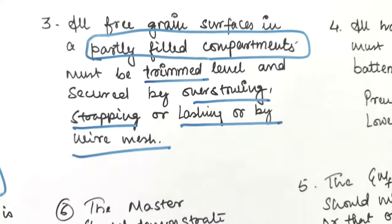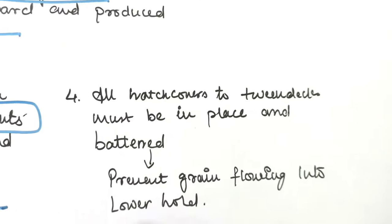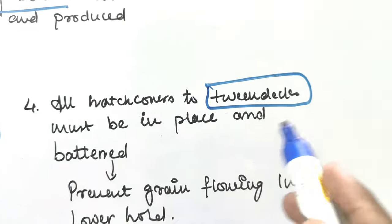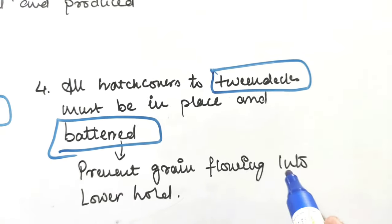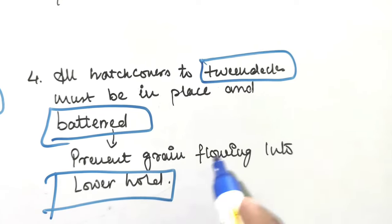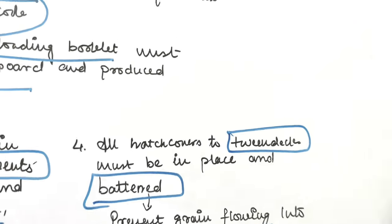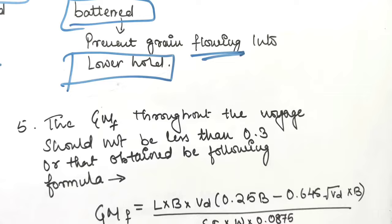Fourth, all hatch covers to the tween decks must be in place and battened. Why? To prevent the grain flowing into the lower hold.